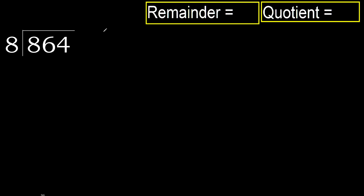864 divided by 8. 8 is not less, therefore start with 8. 8 multiplied by which number is nearest to 8 but not greater? 8 multiplied by 2 is 16, and 16 is greater.